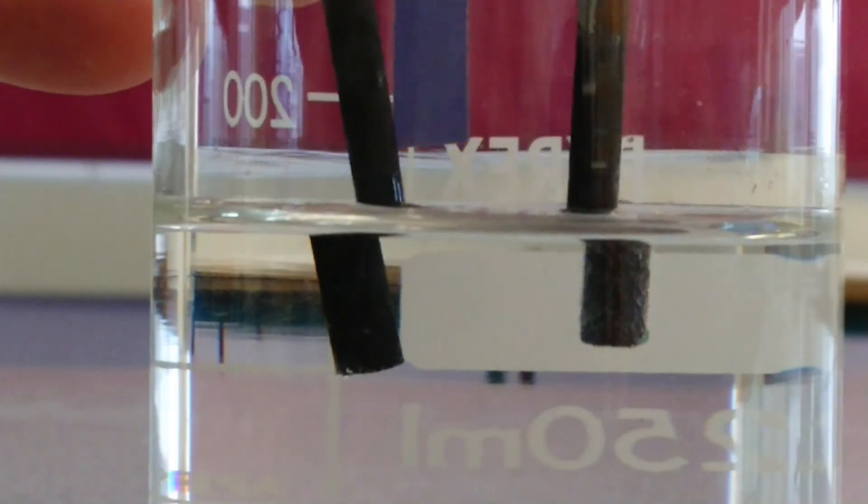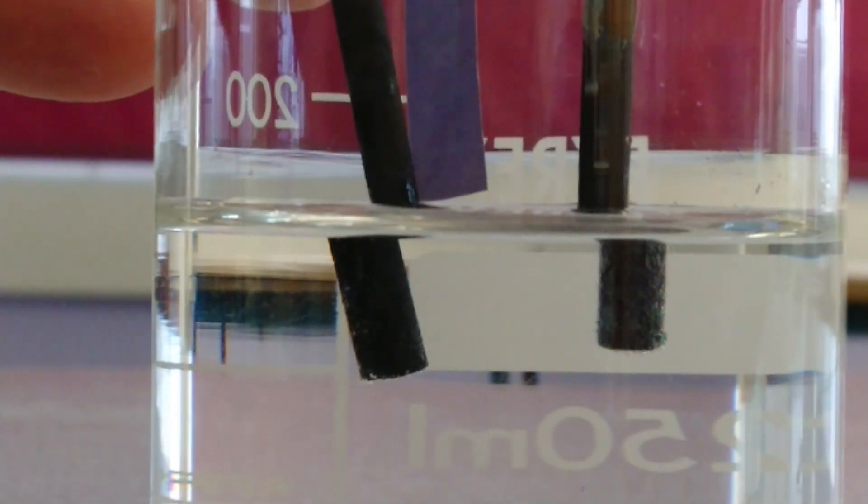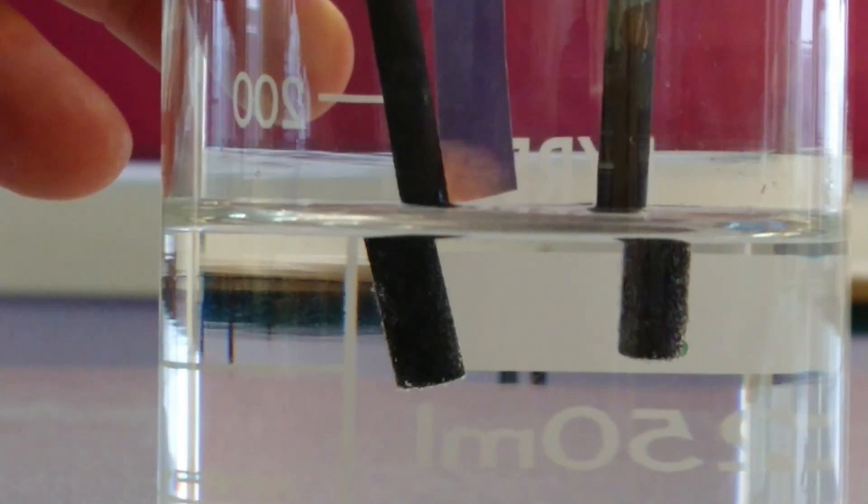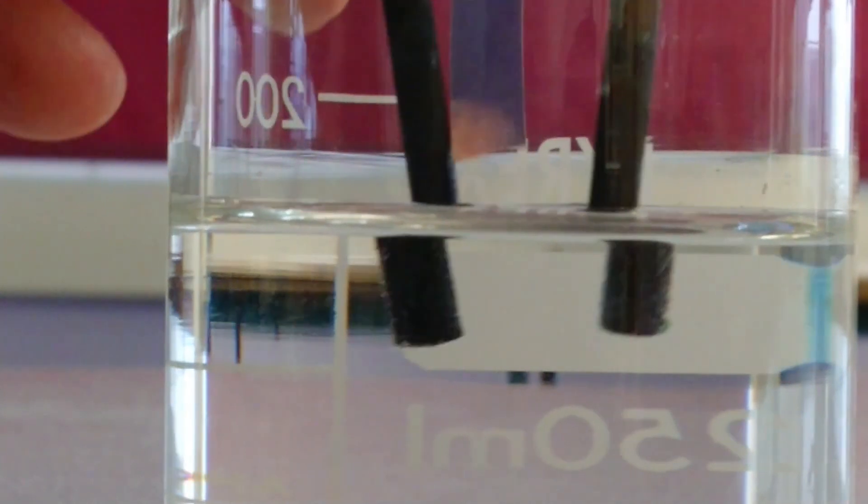So we can see that this is bleaching the litmus paper, so we've got chlorine gas being given off.